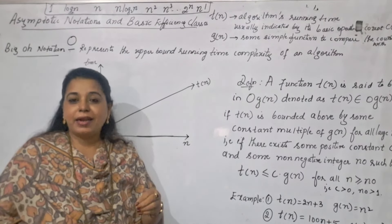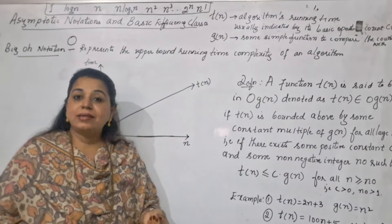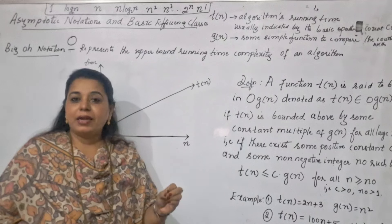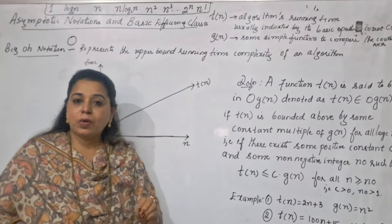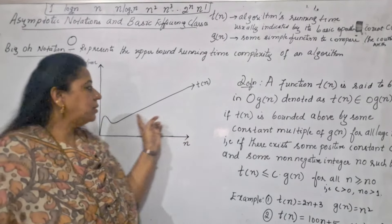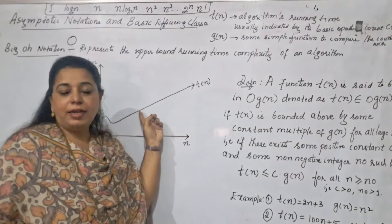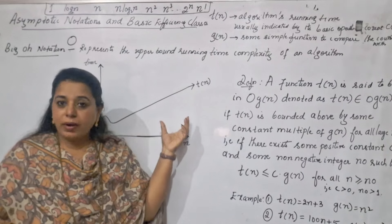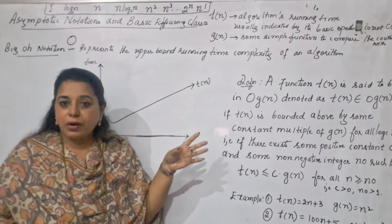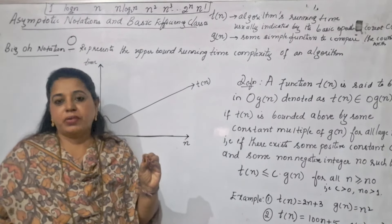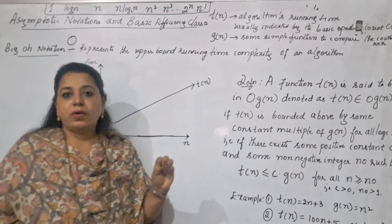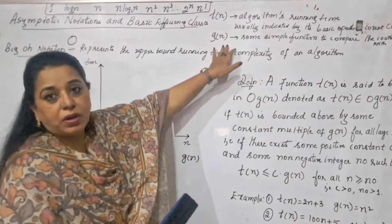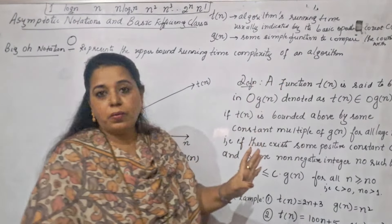The running time of an algorithm definitely depends on the count of the basic operation. So this is how you get a linear behavior. You need to rank and order the different running times of the algorithm, and in order to do that, you need a comparison function. How to compare? For that you make use of another function called g(n). g(n) is some simple function to compare the count with.